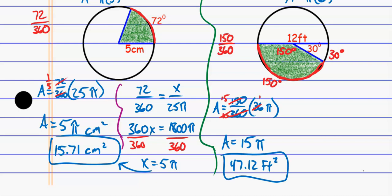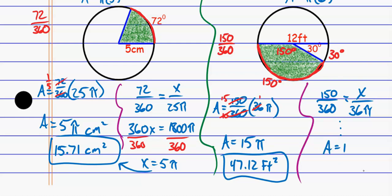If you prefer setting this up as a proportion, the first ratio is 150/360, and that equals the area of the small piece over the area of the whole thing — which is 36π. Cross-multiplying and solving gives area equals 15π. That's square feet. If you want the exact area, leave it as 15π; otherwise plug into the calculator to get 47.12.